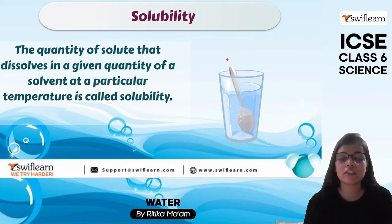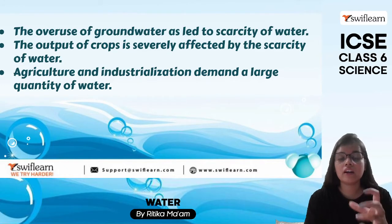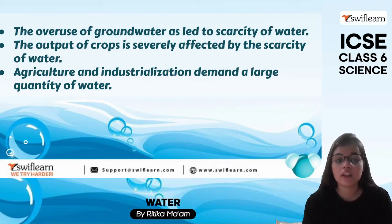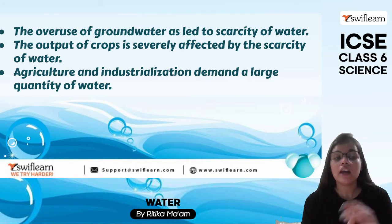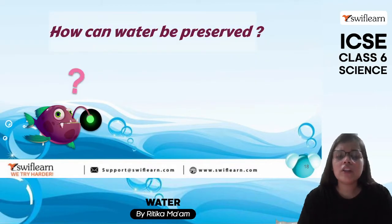Why do we need to conserve water? The portable water available to us is very limited. We have already overused groundwater to a very high level, leading to water scarcity. If we do not have enough water, the output of crops also gets affected. Agriculture and industries need a huge quantity of water, so everything we are doing is leading to scarcity, which is why we must save water.